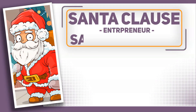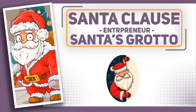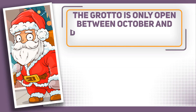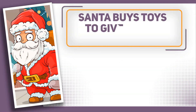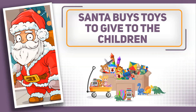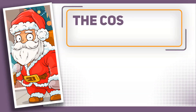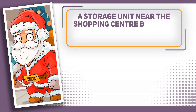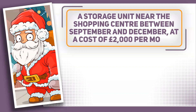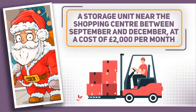Now let's look at an entrepreneur that's having some cash flow problems. We're going to meet a familiar face — this particular Santa has a grotto in a shopping centre in the south of England. The grotto is only open between October and December, and Santa pays £3,000 a month rent for the grotto during these months. Santa buys toys to give to the children from a group of toy makers and he buys them in September, paying for the toys as soon as he receives them — the cost of the toys is £50,000. He also hires a storage unit near the shopping centre between September and December at a cost of £2,000 per month, paid at the start of each of these months.